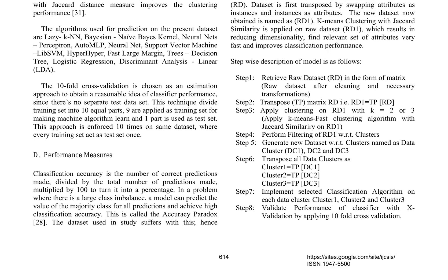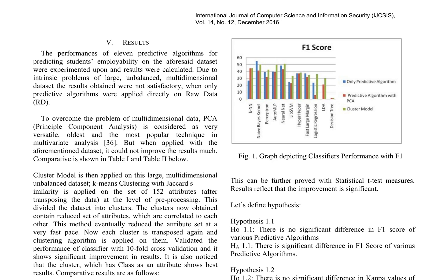The cluster model involves eight steps: retrieving the raw dataset, transposing, applying clustering, filtering, generating new datasets, transposing data clusters, implementing classification algorithms, and validating performance with ten-fold cross-validation. Eleven predictive algorithms were applied to a dataset to predict students' employability, but initial results were unsatisfactory due to the dataset's complexity.